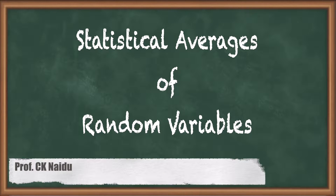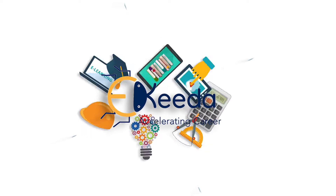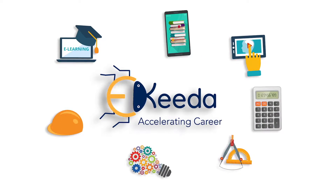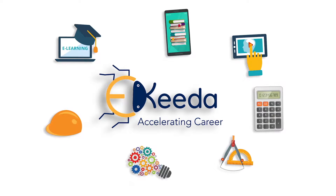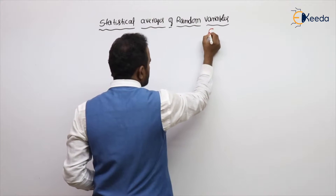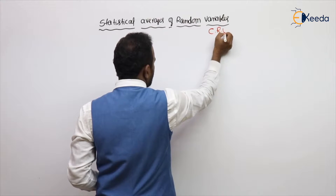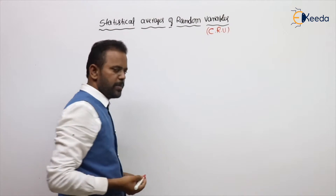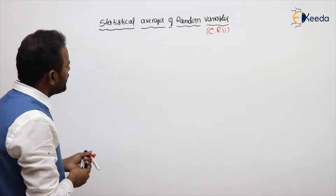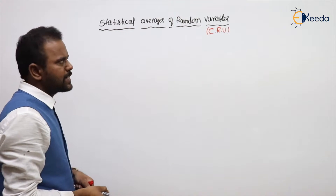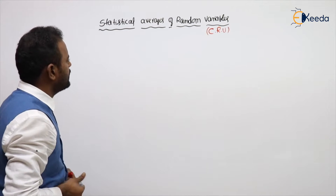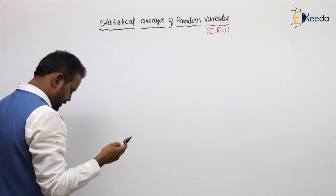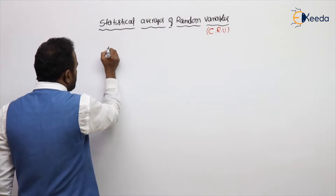Hello students. In this video we will be learning about statistical averages of random variables. First I will discuss continuous random variables, and later we will get back to discrete random variables. Coming to the statistical averages, the first one is called mean.